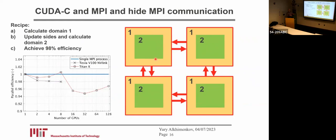Because we partition our subdomains into two parts, we can hide MPI communication. Because of GPU streams, we can do several operations in parallel — we can update our subdomain and exchange boundary points between GPUs simultaneously.